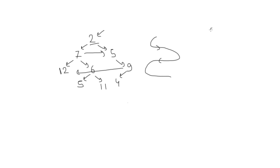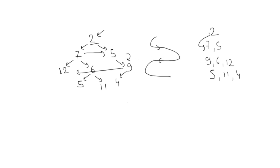For example, first I will print 2, then I will print left to right: 7 and 5, then I will print right to left: 9, 6, 12, then again left to right: 5, 11, 4. So this is spiral — left to right, then right to left, then again left to right, and the next level would be right to left.